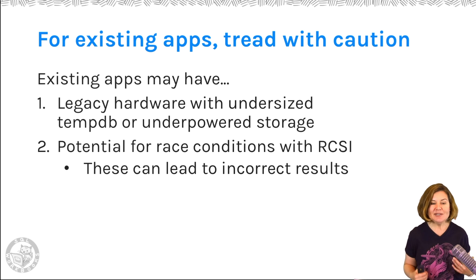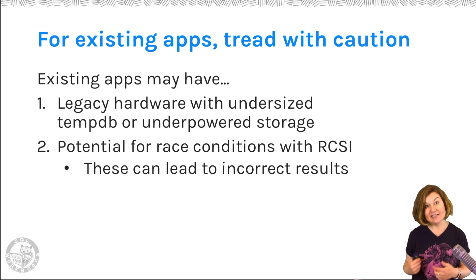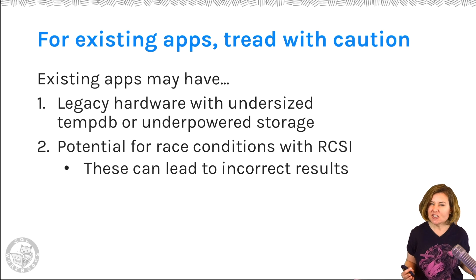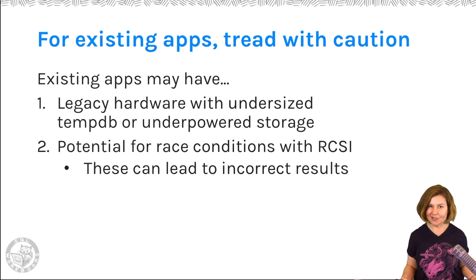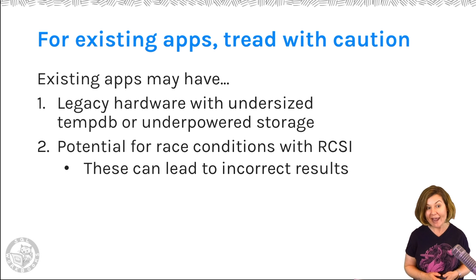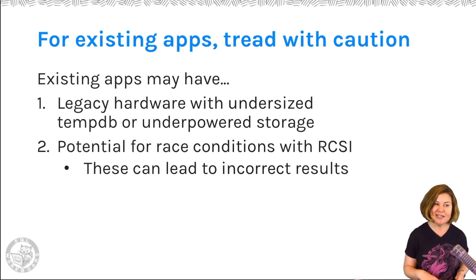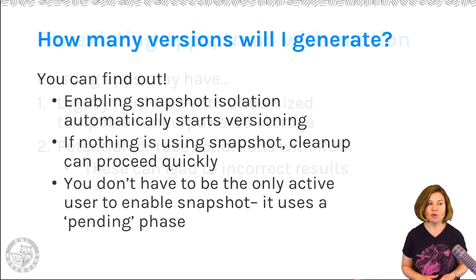We also have a potential for race conditions with read-committed snapshot isolation. If we just change everyone's default isolation level, there can be times when users start getting a different kind of incorrect results. I know folks who enabled read-committed snapshot isolation and it did solve a blocking problem, but then it caused a different data problem and they had to solve it a different way for an existing application. Sometimes you can solve it with snapshot isolation, but we do have to be careful about read-committed snapshot isolation and about performance on our instance.